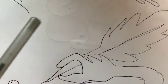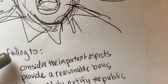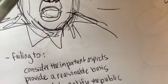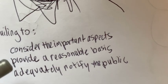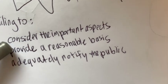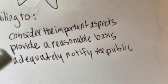Harvard's case argues that the guidelines violated the Administrative Procedure Act by failing to consider the important aspects of the problem in advance of its release, failing to provide a reasonable basis for the policy, and failing to adequately notify the public.